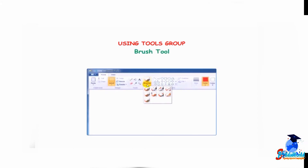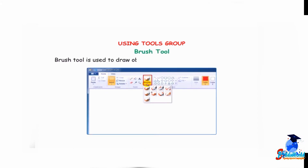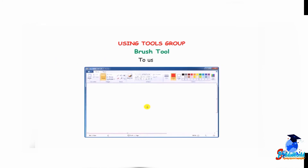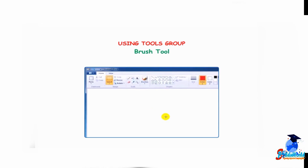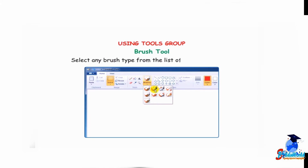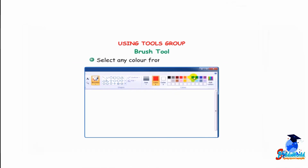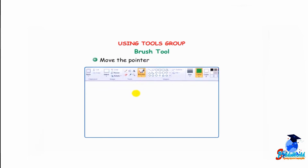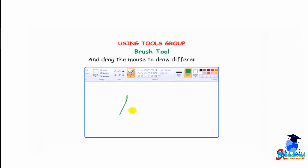The brush tool is used to draw objects with different kinds of brushes. To use it, click on the brushes drop-down arrow and select any brush type from the list of available options. Select any color from the colors group, move the pointer to the drawing area, press and hold down the left mouse button and drag the mouse to draw different lines.